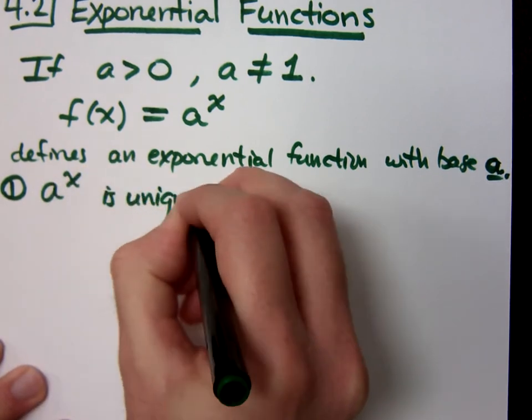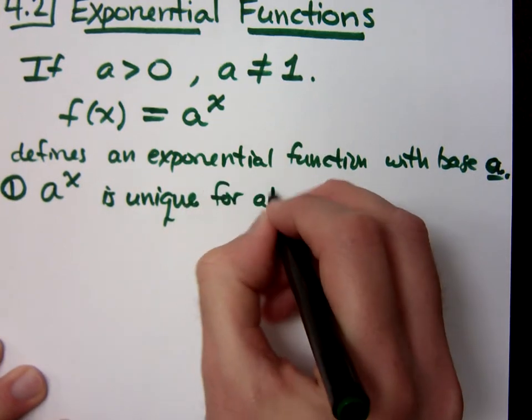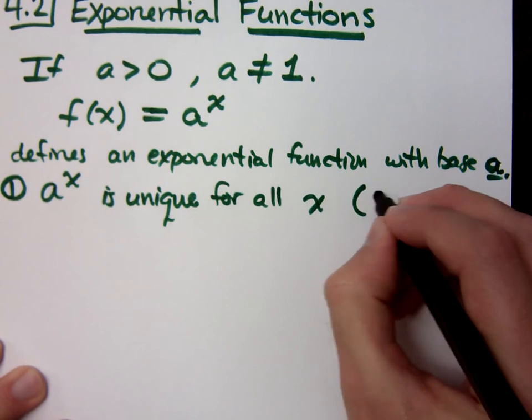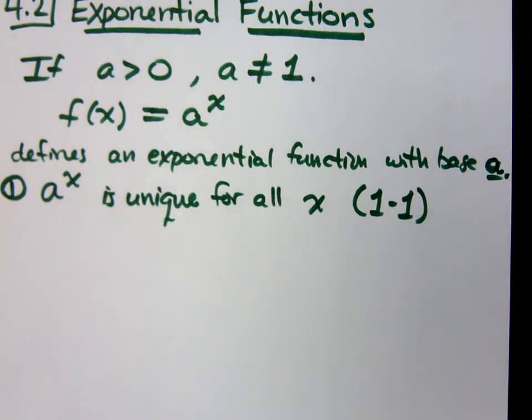a to the x is unique for all x's, which means it's going to be one to one. That means every x value that I plug in, I get one and only one y value out, and it's a unique value. Which sadly means there's no symmetry, but that's okay.